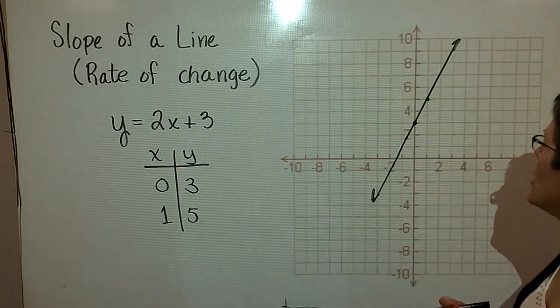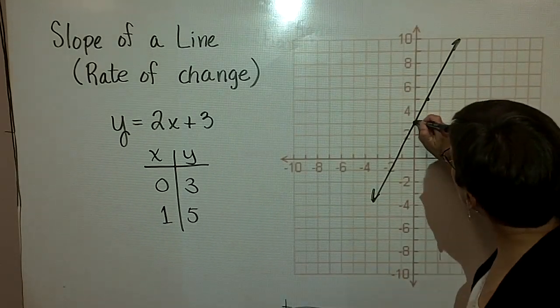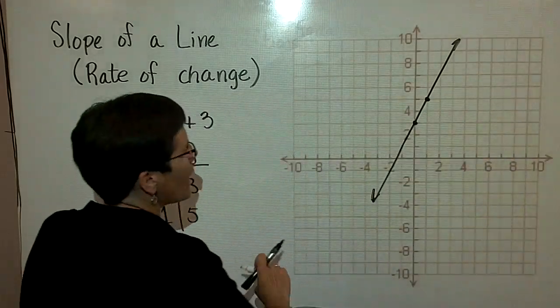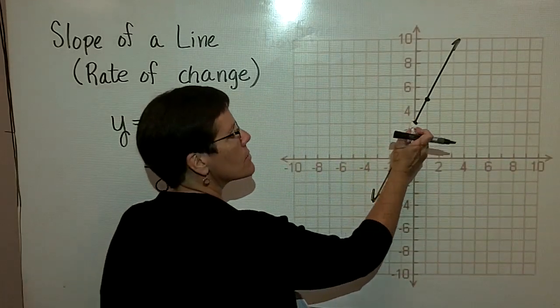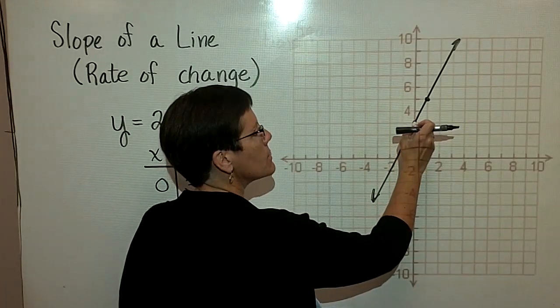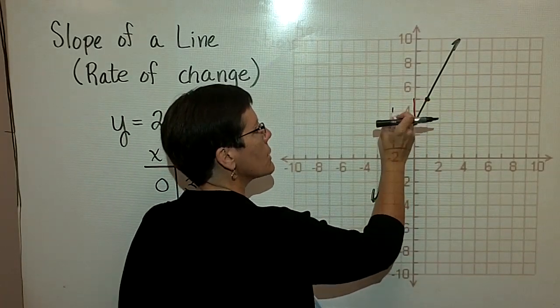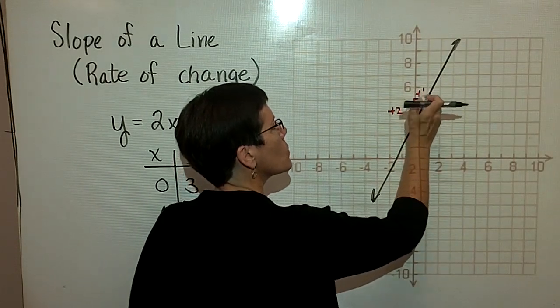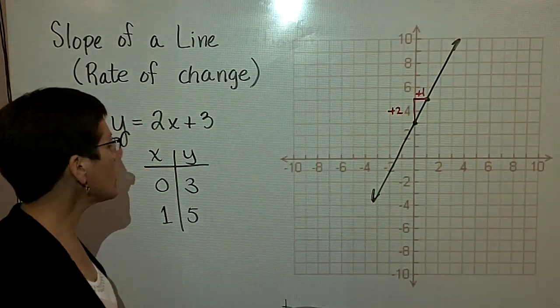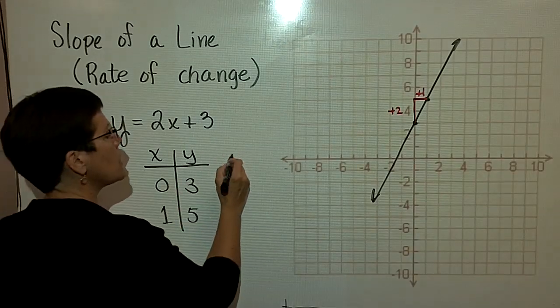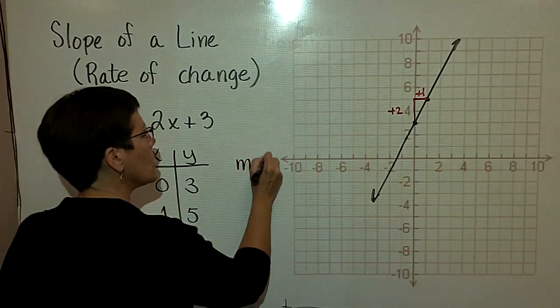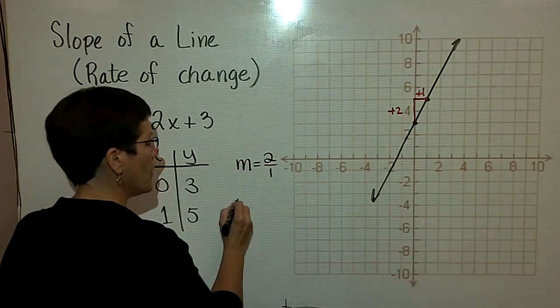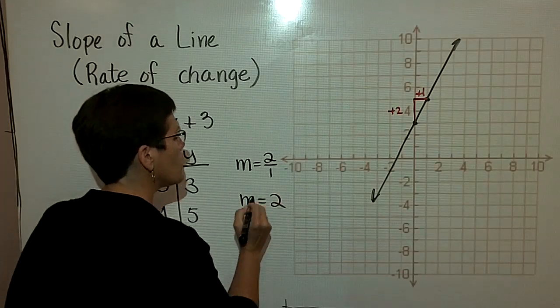What I'd like you to notice is between these two ordered pairs now, I'd like you to recognize that the slope of this line is the change in y. So it looks like it goes up 2. And then the change in x, it goes to the right 1. So it looks like the slope of this particular line is equal to 2 over 1, which is just 2.